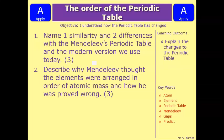Okay, let's have a look at a couple of three-mark questions then. So number one says, name one similarity and two differences with Mendeleev's periodic table and the modern version we use today. So think back to the beginning of the video, what did I say was the same, and what two things were different? And then the second question, describe why Mendeleev thought the elements were arranged in order of atomic mass, and how he was proved wrong. So think through, why did he originally put it in order of atomic mass, and then what couple of things proved that it wasn't actually the case. Pause the video, have a go, and we'll see if you're correct in a second.